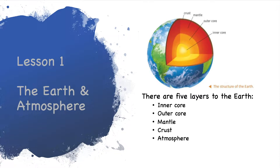In the first lesson you learned about the structure of our Earth. Our Earth is layered with the four layers being the inner core, the outer core, the mantle, the crust, and the atmosphere.